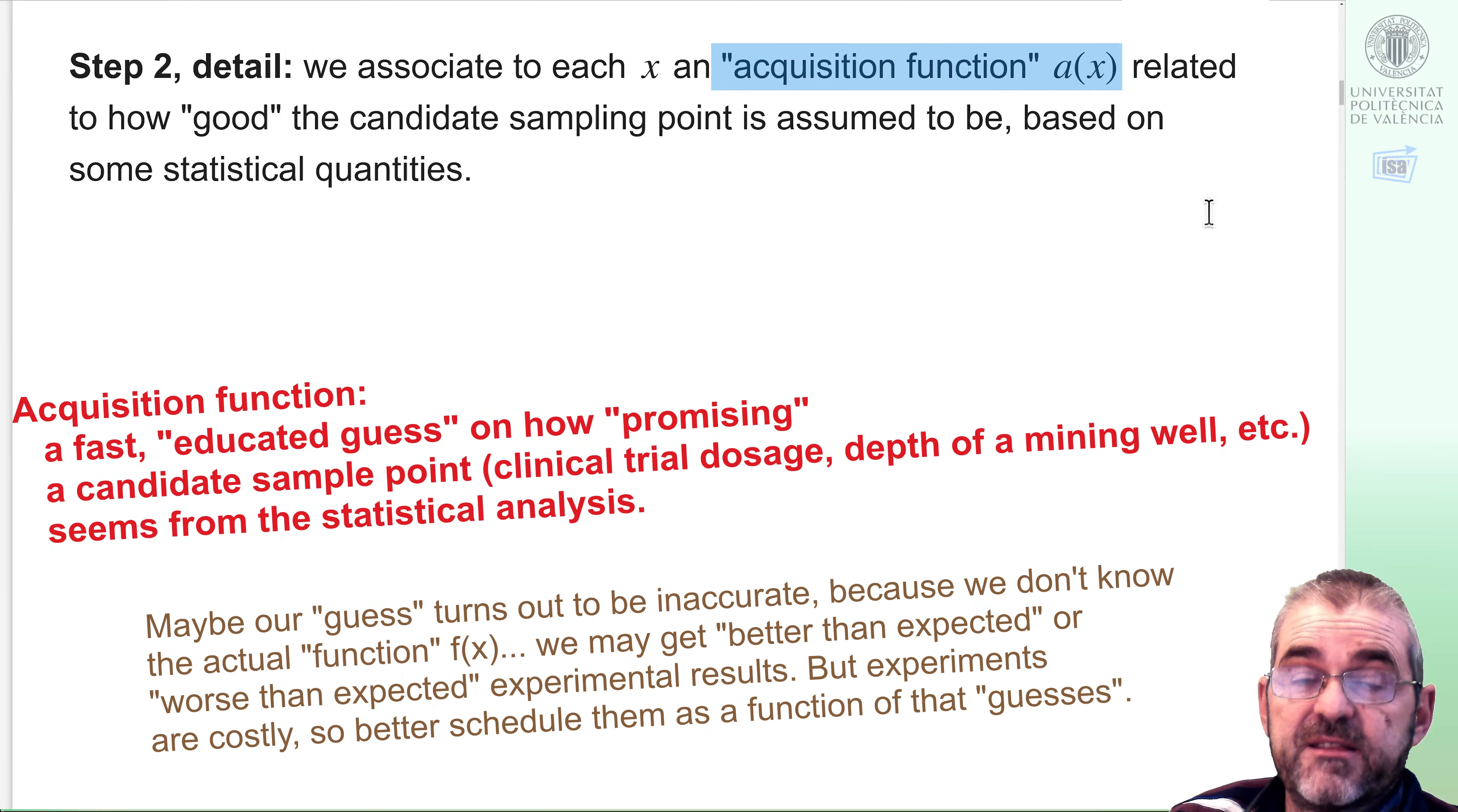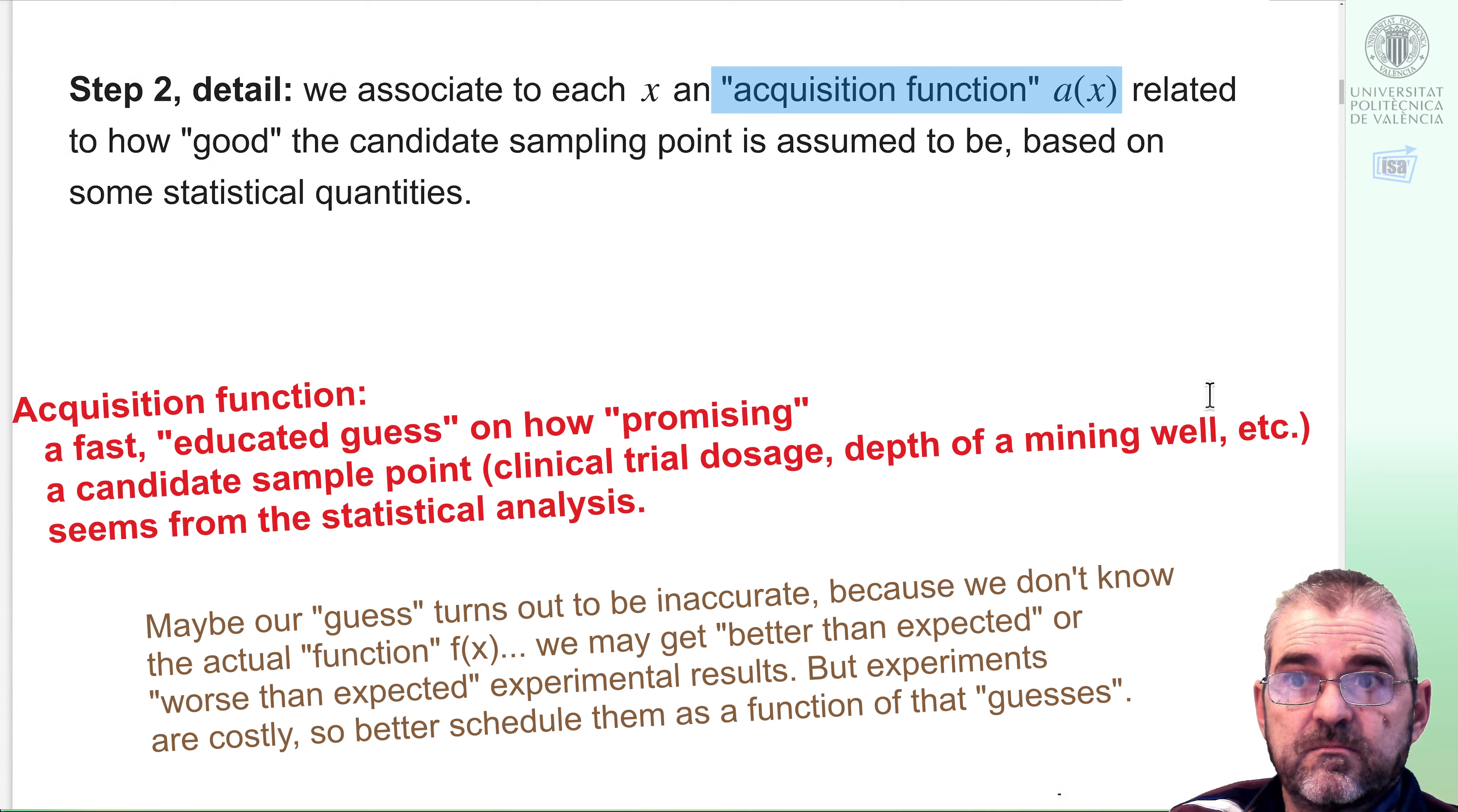I plug in a candidate x, and it tells me how good it seems to be. The key idea is that that thing that tells me how good a candidate sample point is must be carried out with my statistical information about mean, variance, covariance, whatever, and it must be fast.